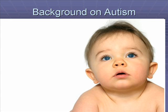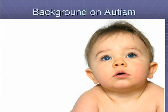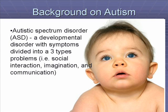For some background on Autism: Autistic Spectrum Disorder, or ASD, is a developmental disorder with symptoms divided into three types of problems. These include social interactions, imagination, and communication.